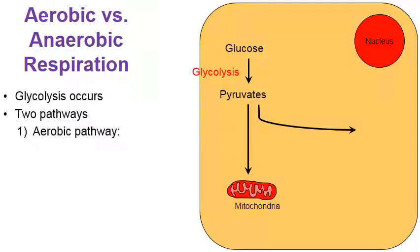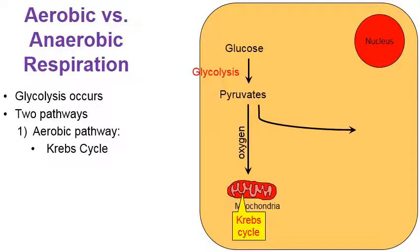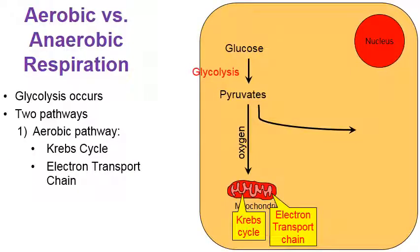In the mitochondria, this is the aerobic pathway. If there's oxygen present, the pyruvates enter the mitochondria, and then that's when the Krebs cycle will occur, followed by the electron transport chain. When you add up the ATP created through glycolysis, plus the Krebs cycle, plus the electron transport chain, you get about 36 molecules of ATP.